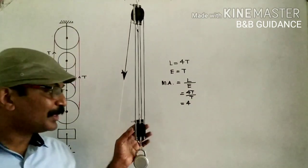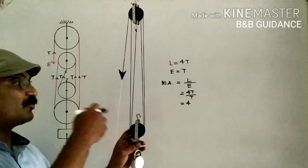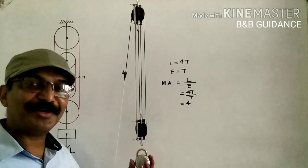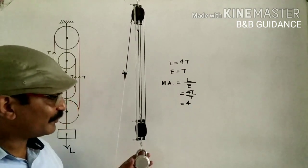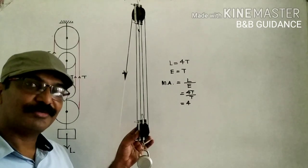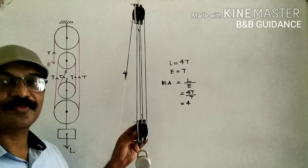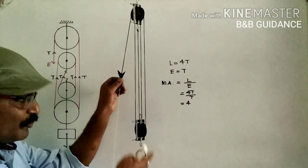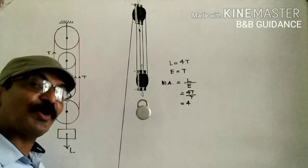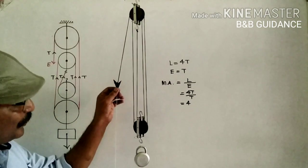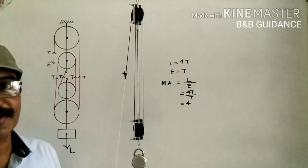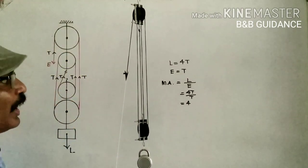The mechanical advantage of a block and tackle system with four pulleys equals 4. However, this is the ideal mechanical advantage. When we wrote Load = 4T, we did not consider the weight of the lower block or friction. When effort is applied, the lower block is also raised along with the load, so we must overcome its weight too. This mechanical advantage is therefore ideal.